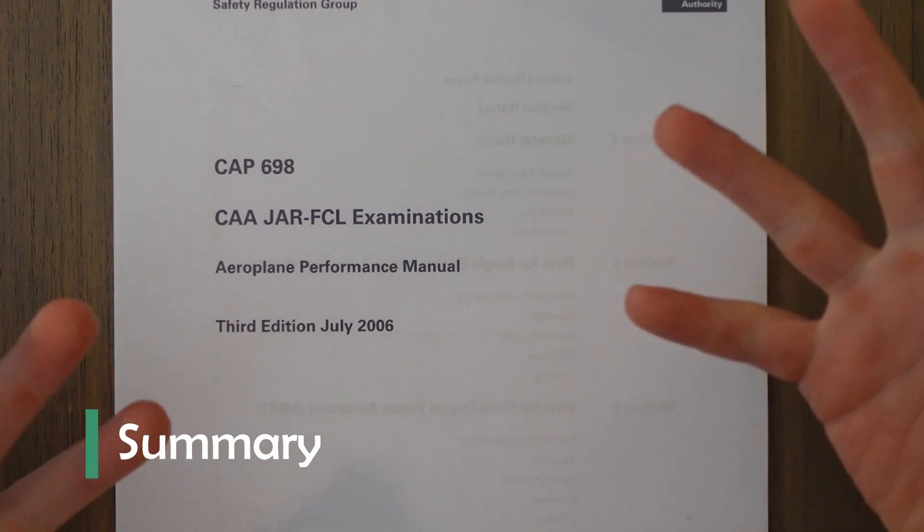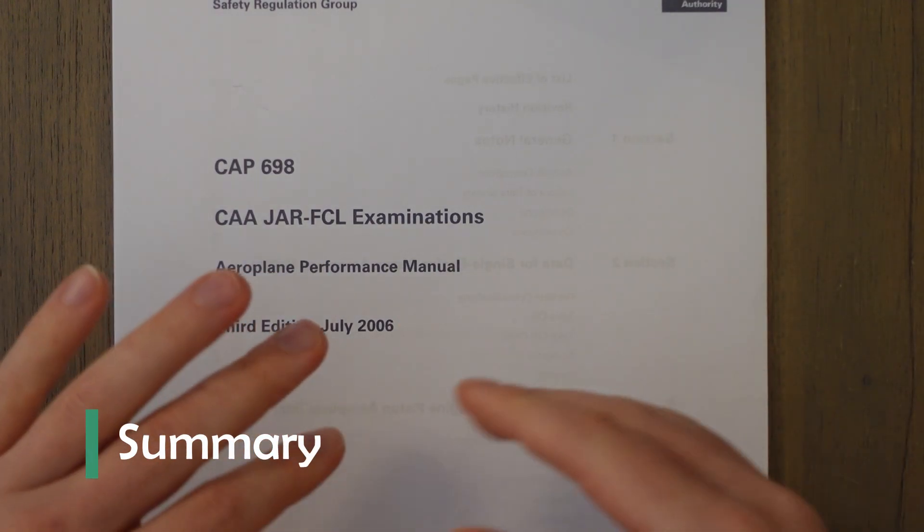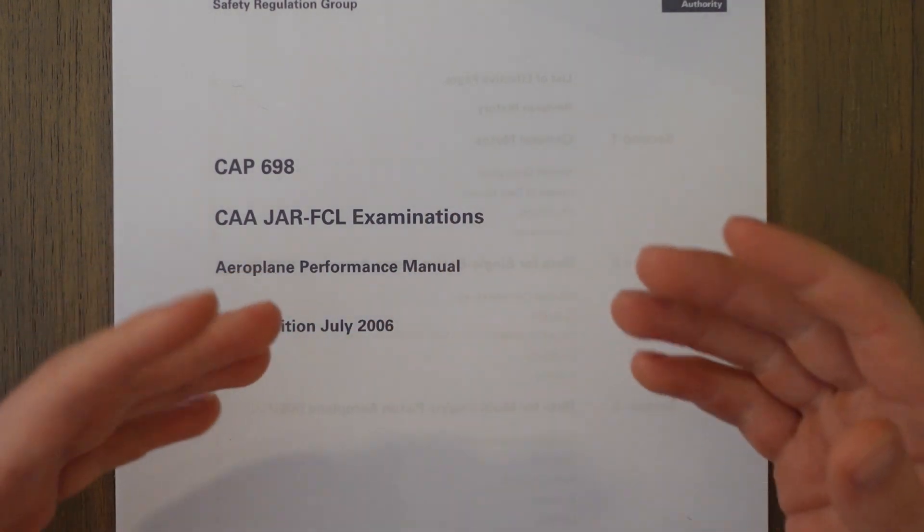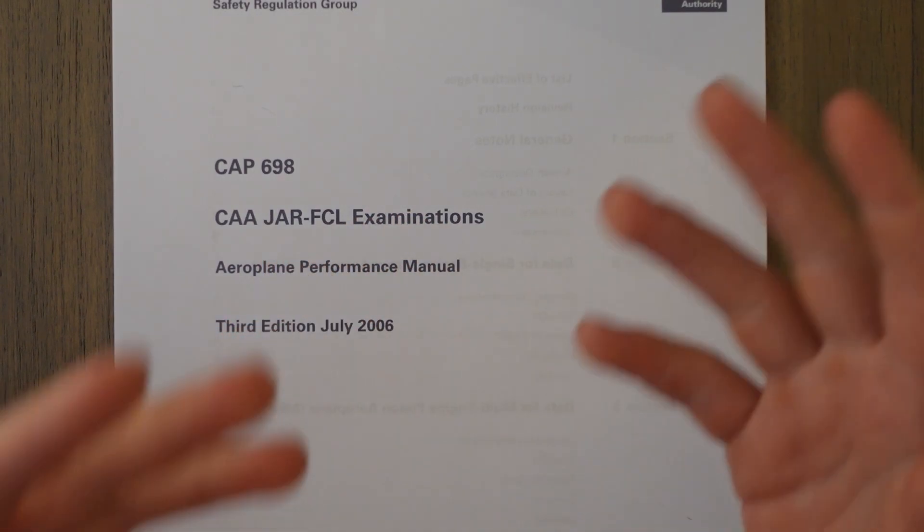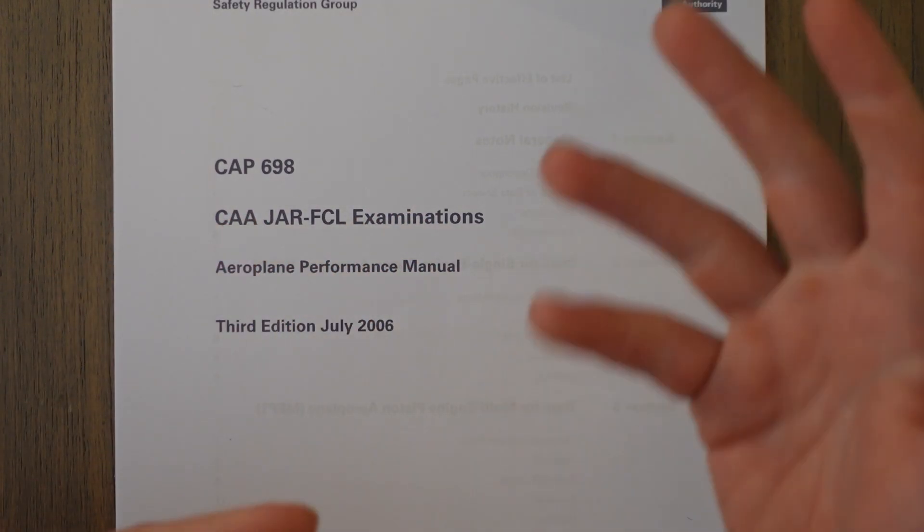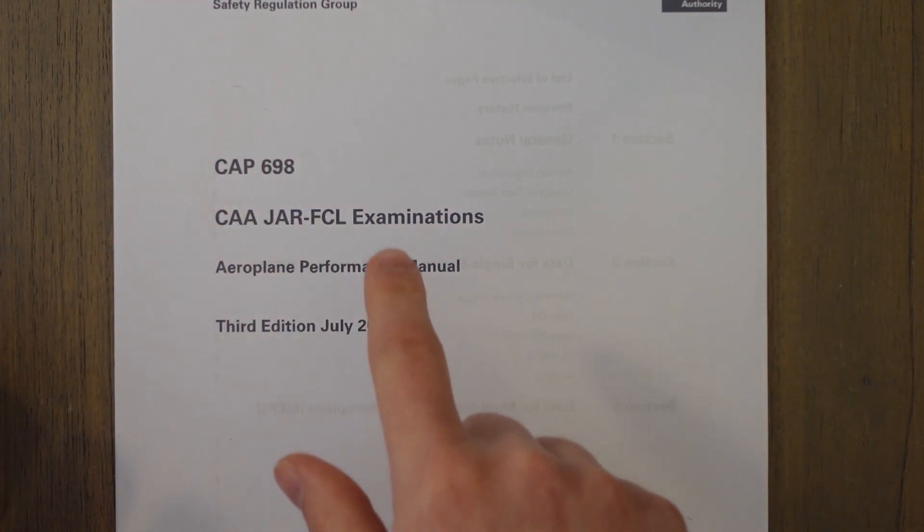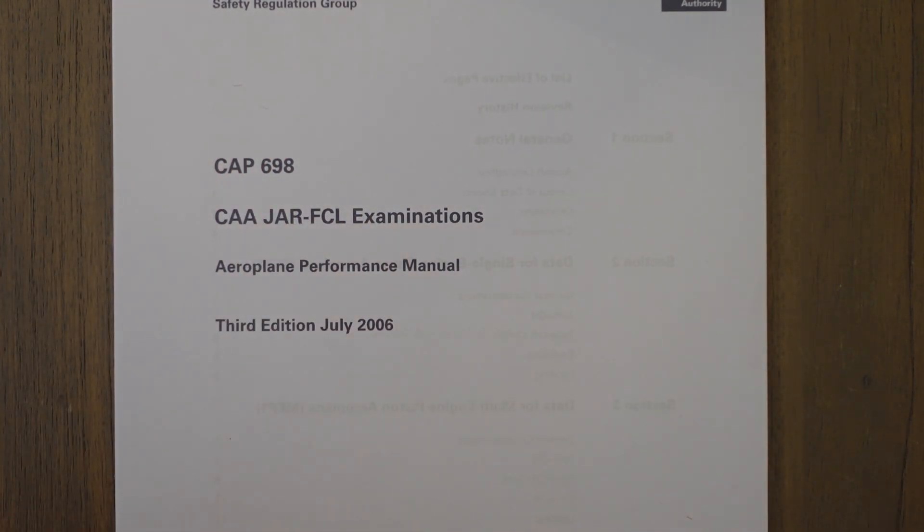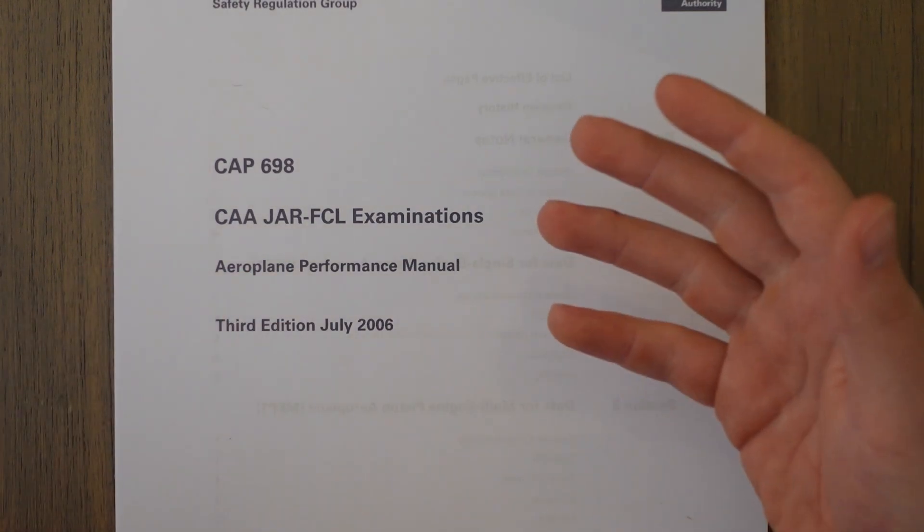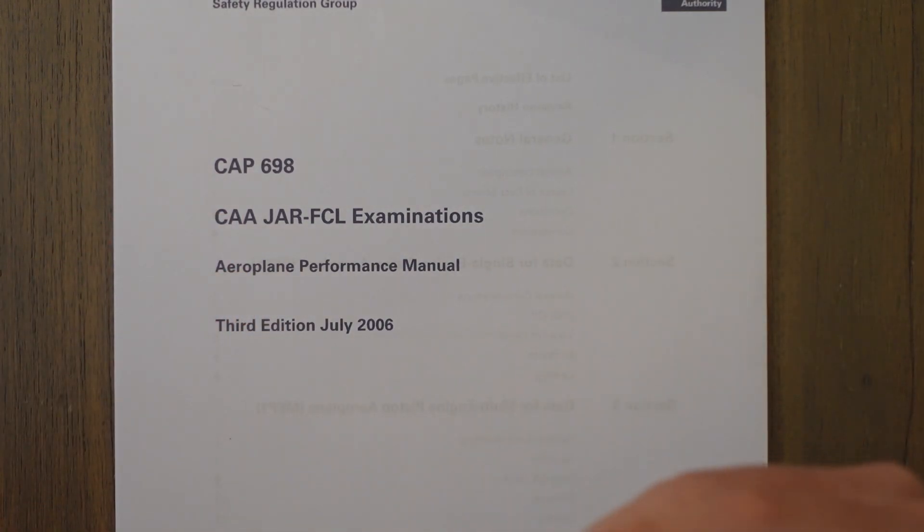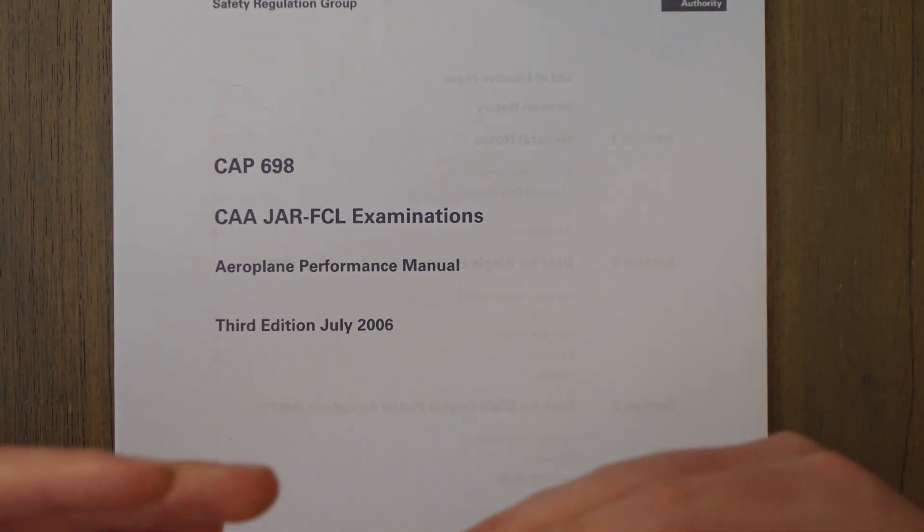So there you go, that's it. Hopefully you can see that the graphs are not that big of a deal really. And if you forget things like factors or even how to do the graphs themselves, there's plenty of examples and information in the CAP 698 document. Basically, by getting familiar, you won't go wrong.